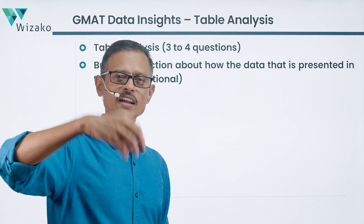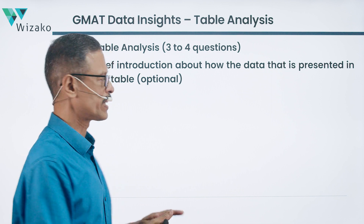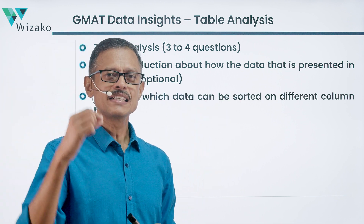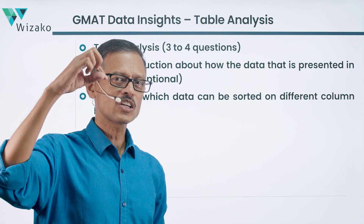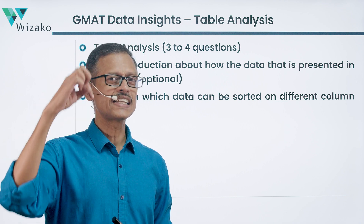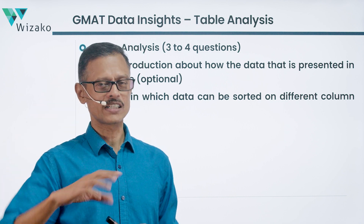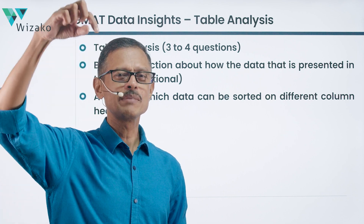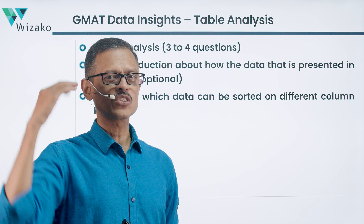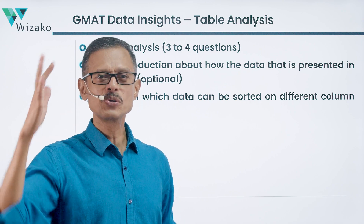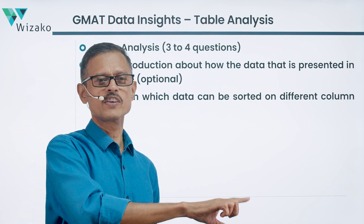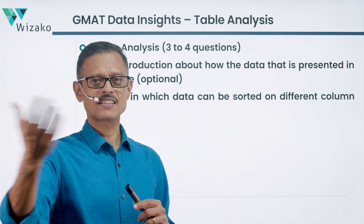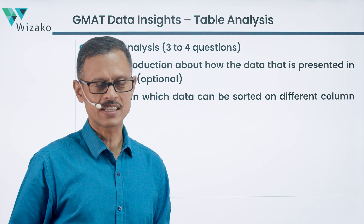The table allows you to sort data by any column in ascending or descending order using a toggle button. Click it once and it sorts ascending; click again and it sorts descending. You can choose any column to sort on. I'll take a couple of examples in subsequent slides to show how this works.